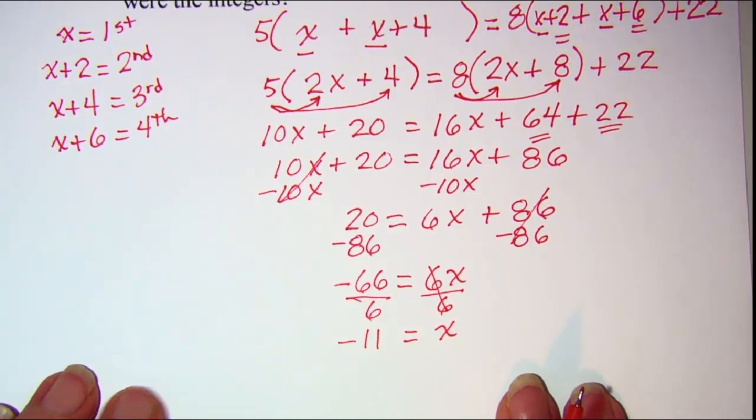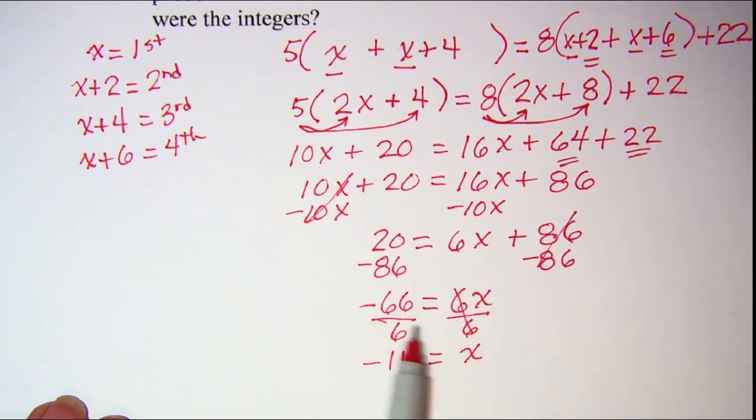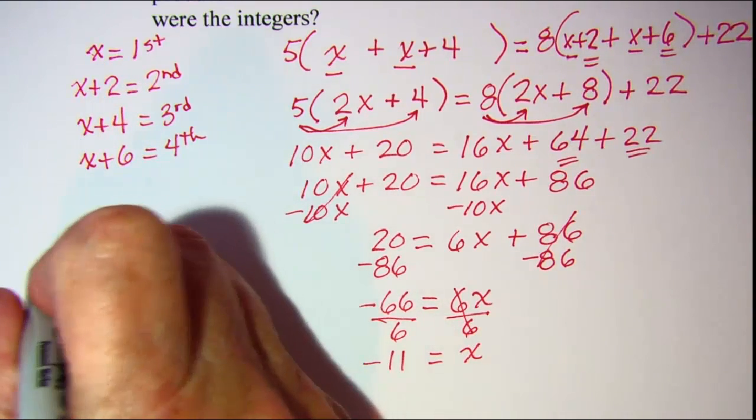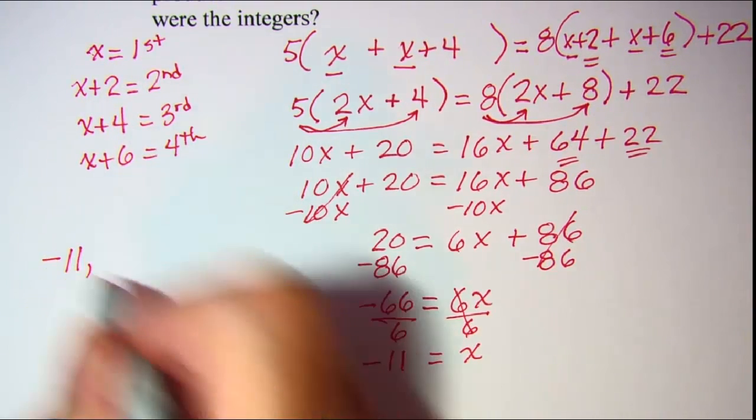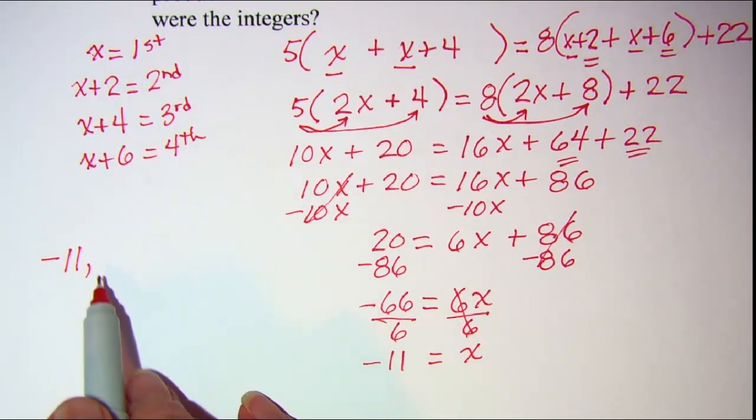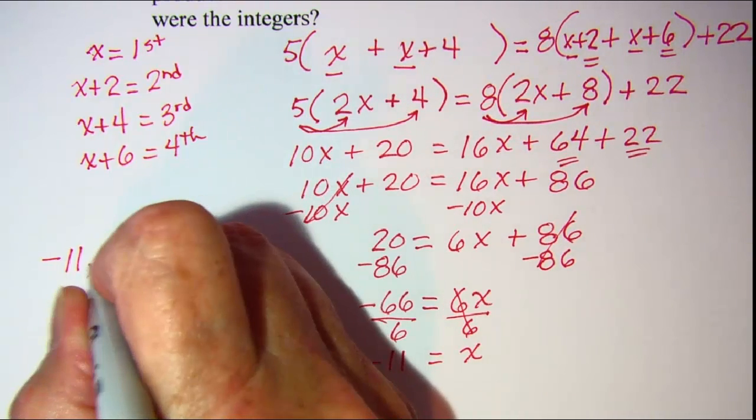Alright now I need to find the integers. So I know that x is negative 11 and that will be my first integer. So negative 11 is my first one. If I add 2 to that to get my second integer, negative 11 plus 2 is negative 9.